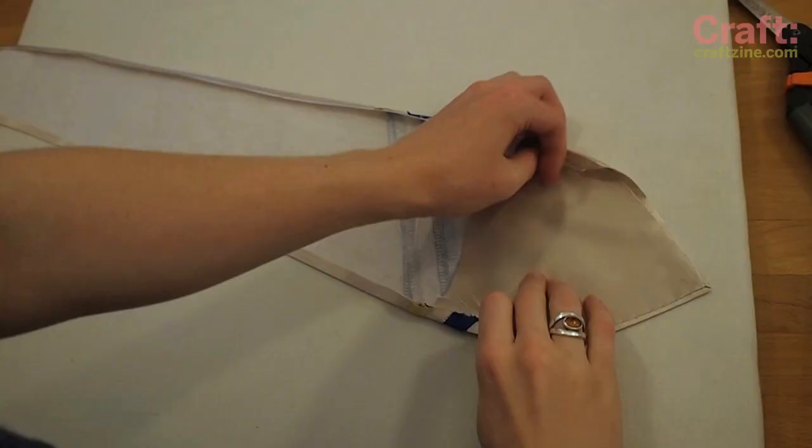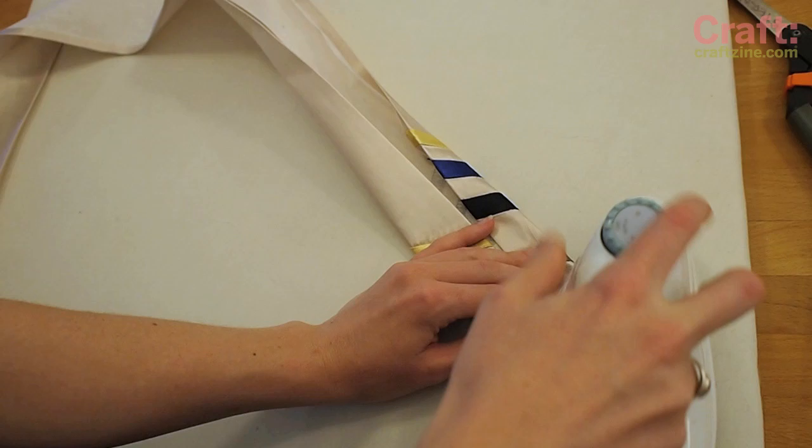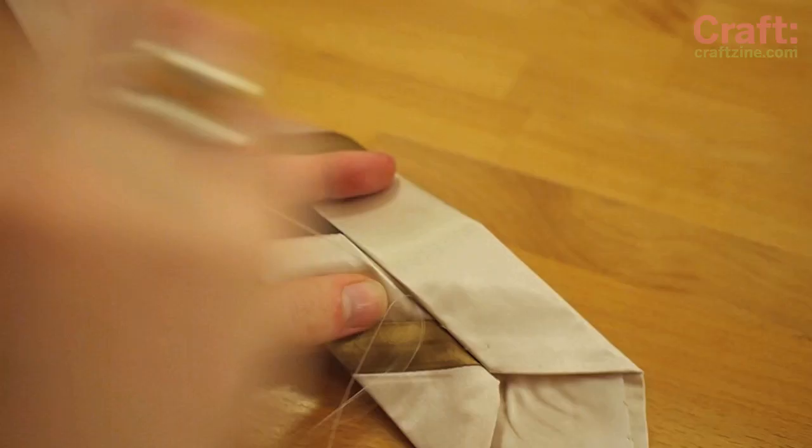Iron a quarter inch hem along the two long edges of the tie and then press these edges again to meet in the center back of the tie. If your tie fabric is very thin, install a piece of thick collar interfacing inside this fold with the ends tucked inside the lining.